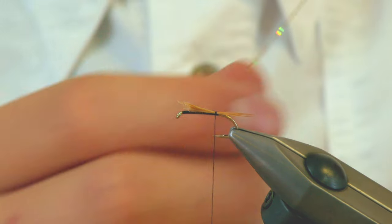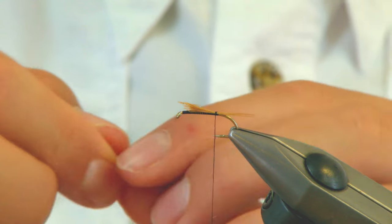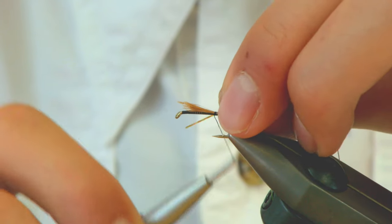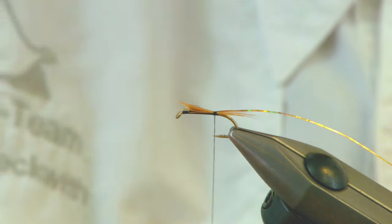Then grab your rib, this is fine gold holographic tinsel. You can use medium but I like fine for these sort of flies. Again, just two turns, you don't want to build too much bulk up at the back of the fly.